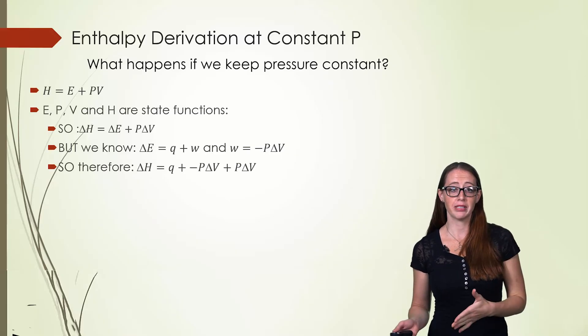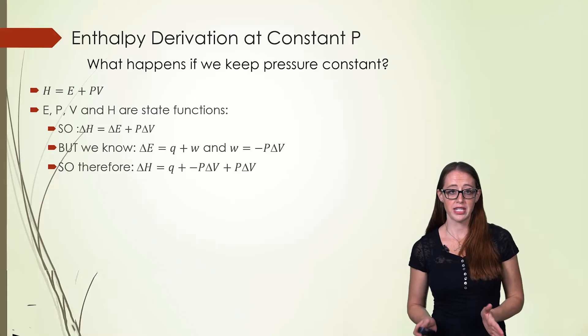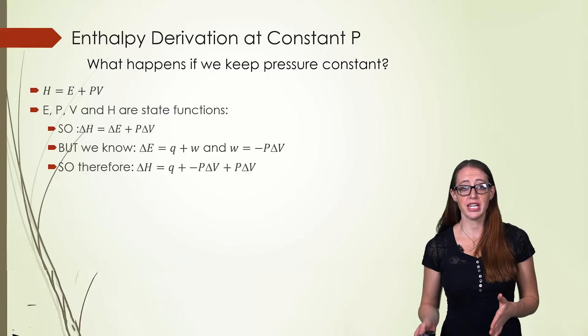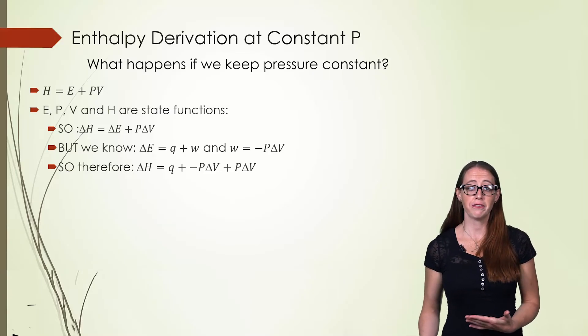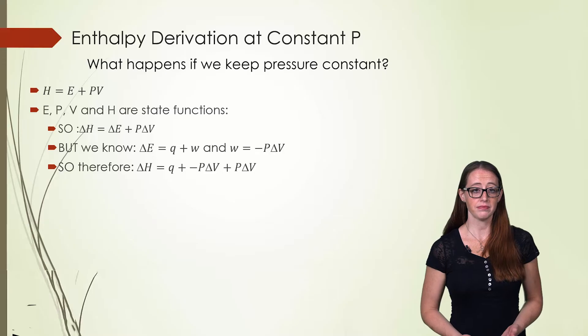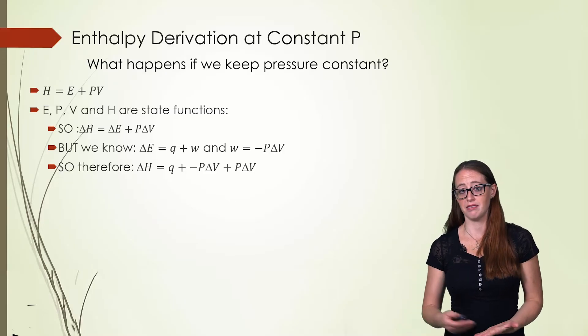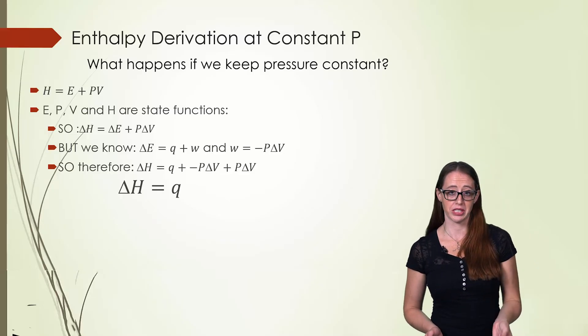Now let's take these two things and combine them together. If you take and you fill in the formula for work into the Q plus W, so take a moment and do that yourself. And then you take this Q plus negative P delta V and you fill that into the delta H equation, you get what I have here in this line. Now if you have negative P delta V plus P delta V, those two are going to cancel. And so you get delta H equals Q.